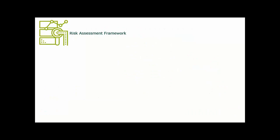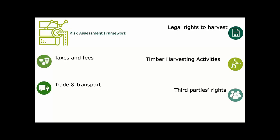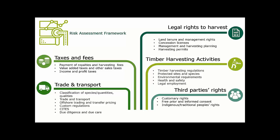We base our risk assessments on our risk assessment framework. This means we have identified which categories of law we are evaluating for each risk assessment. We look into legal right to harvest, taxes and fees, timber harvesting activities, trade and transport, and third parties' rights. These categories of law are similar to those defined in the UTR as applicable legislation. We have further divided these categories into subcategories, allowing us to be very precise on where the risks are for each country and to have a systematic approach across all countries.